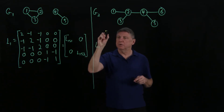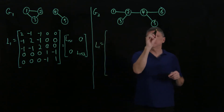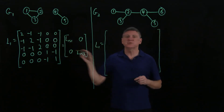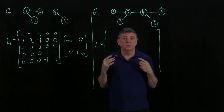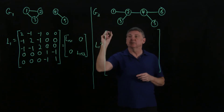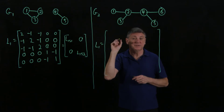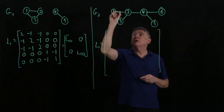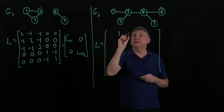For the Laplacian of graph 2, let's fill in the adjacencies first and then negate them. We leave the diagonal entries blank for now since they'll be filled in with the degree. Vertex 1 is connected to 2, so that's a 1; vertex 1 is not connected to anything else.